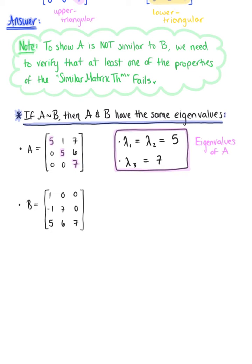And then similarly, looking along the main diagonal of matrix B, we can see that lambda sub one is equal to one and that lambda sub two equals lambda sub three equals seven.